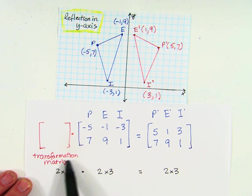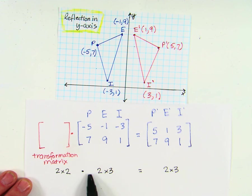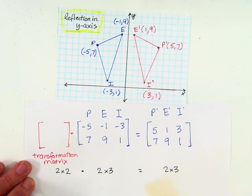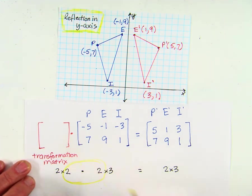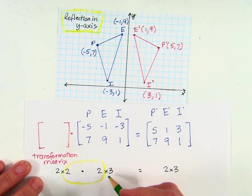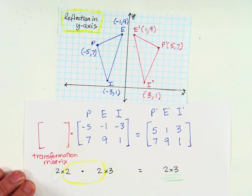Transformation matrix is always going to be 2 by 2. Can we multiply? Well, let's see. Two columns, two rows. The middle numbers are the same, so yes, we can. And then the other numbers, columns of the first, excuse me, rows of the first and columns of the second, yes, we can multiply these. So go ahead and figure it out.